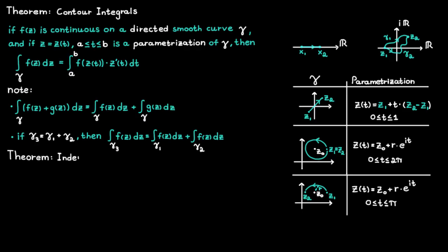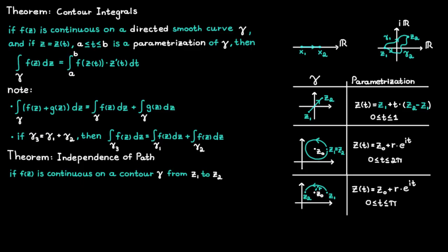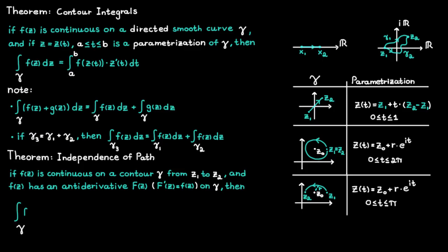Next we discuss independence of path, since there are some functions that don't care which path you take when you integrate them. As long as the starting and end points are the same, integration along different paths will always yield the same results. The theorem tells us that if a function is continuous on a contour gamma — where a contour is made up of a number of directed smooth curves — and the function has an antiderivative on gamma, then the integral of f along gamma equals the antiderivative evaluated at the end point minus the starting point. These are really the best kind of functions, since you can skip the parameterization completely and only the start and end points matter.